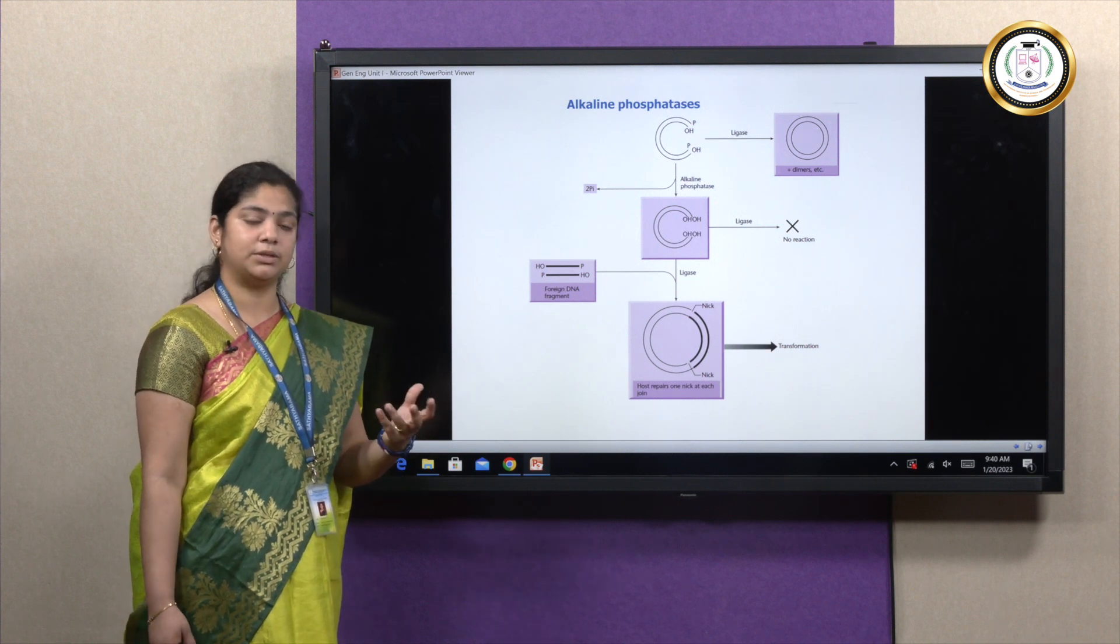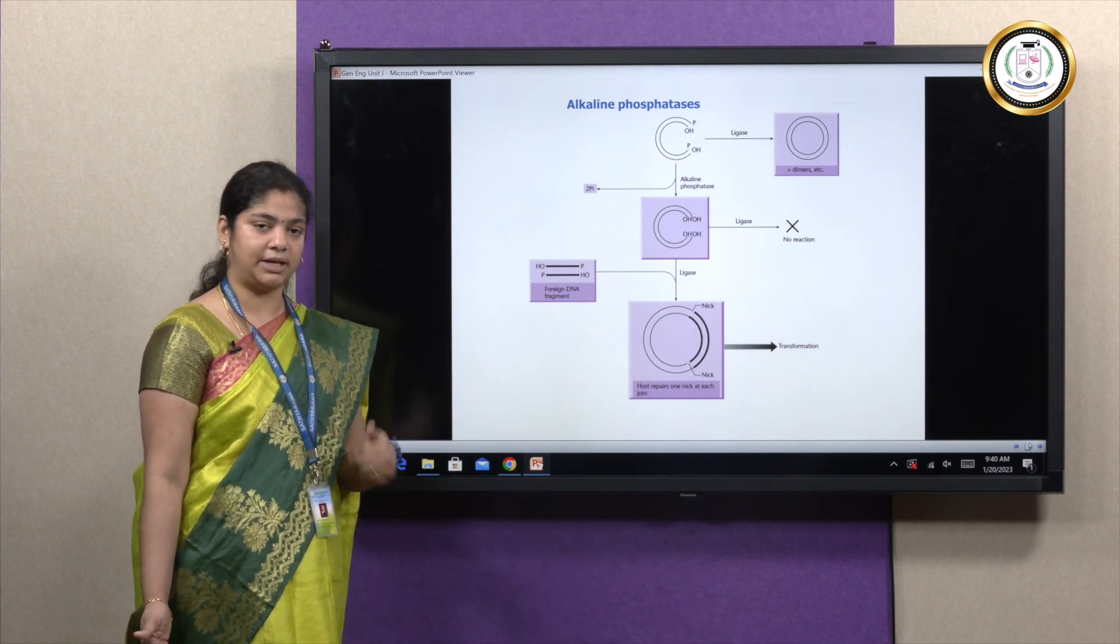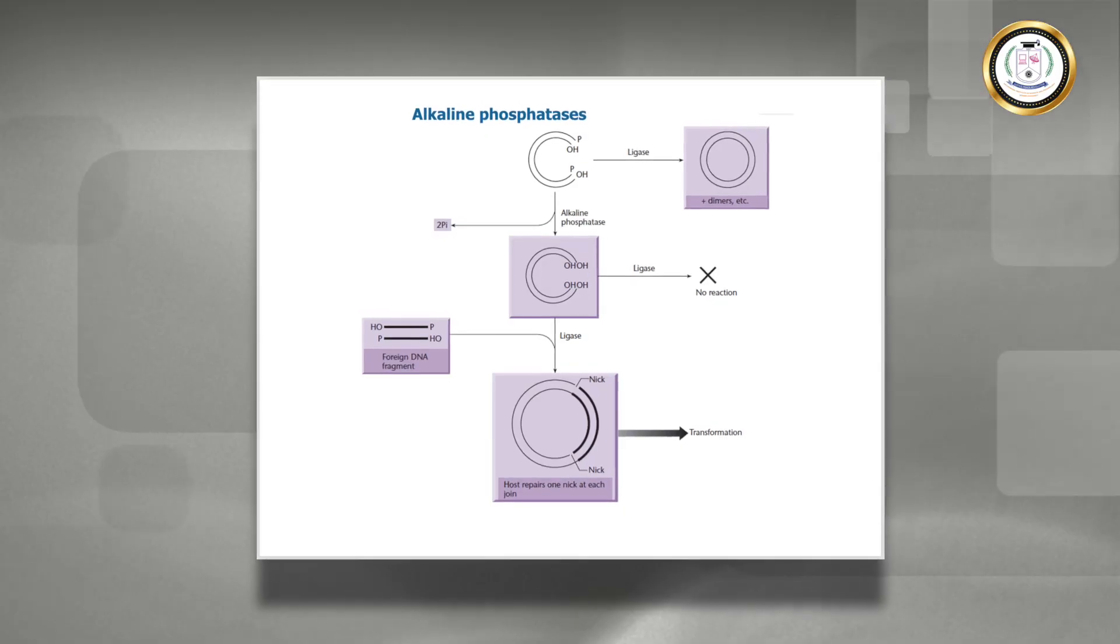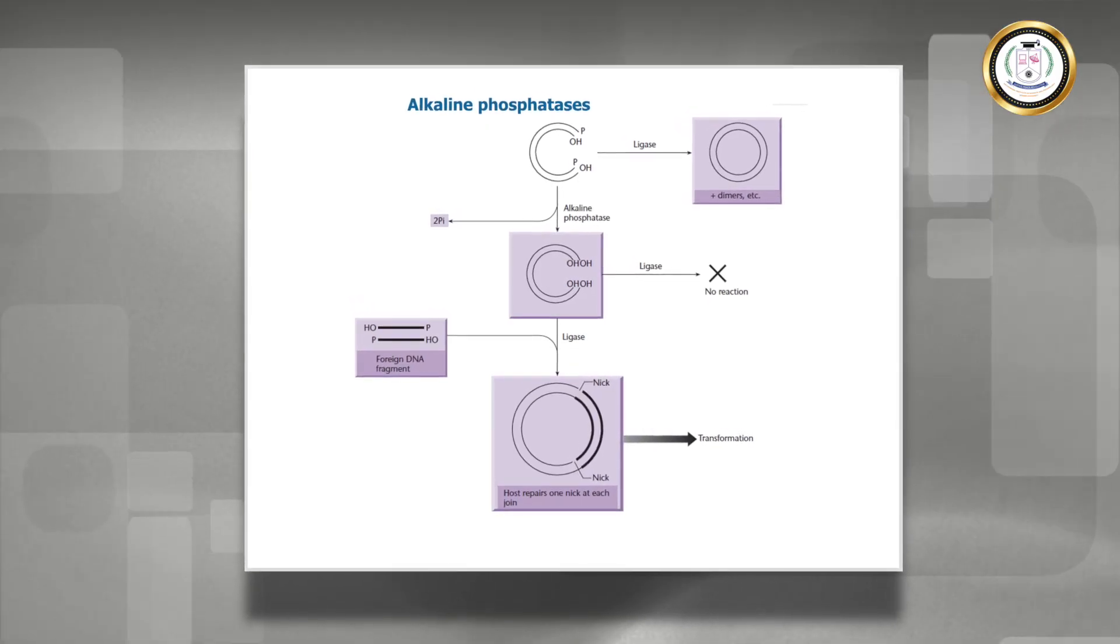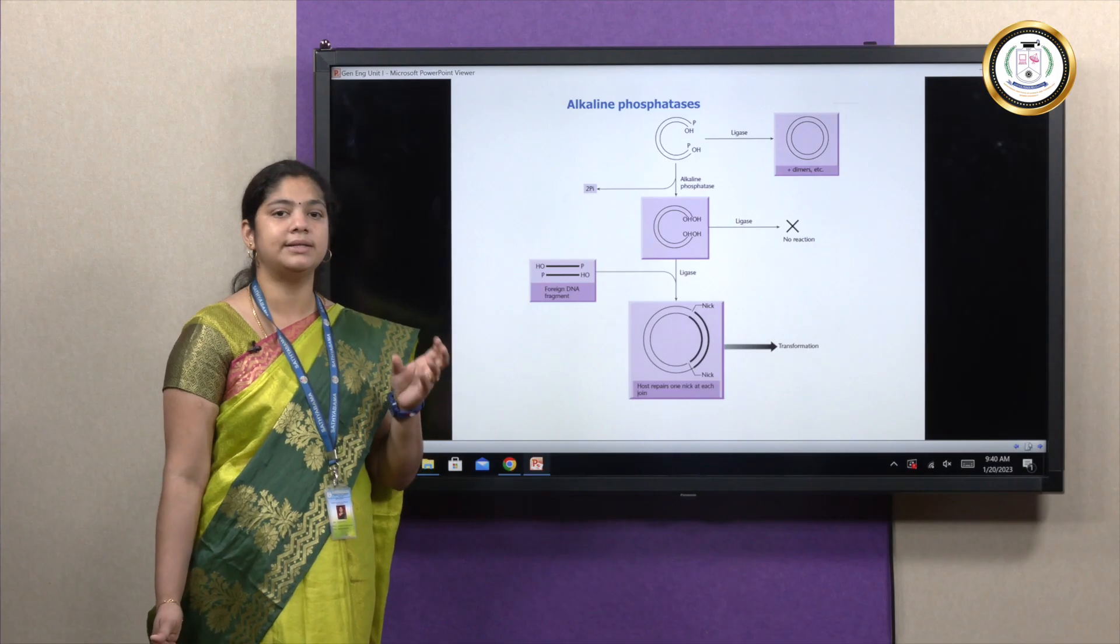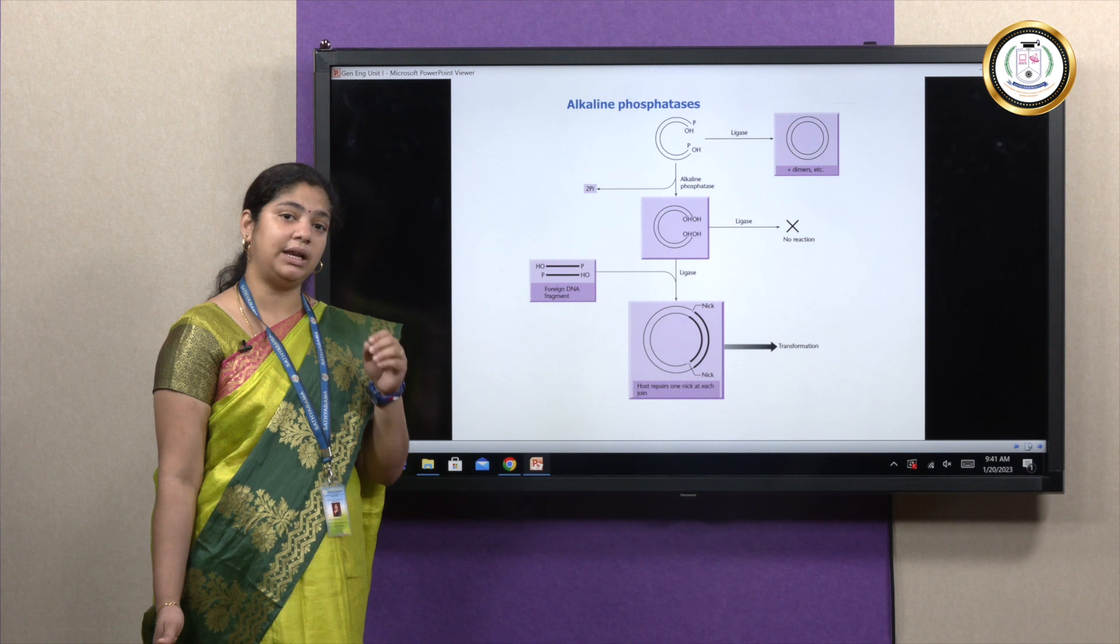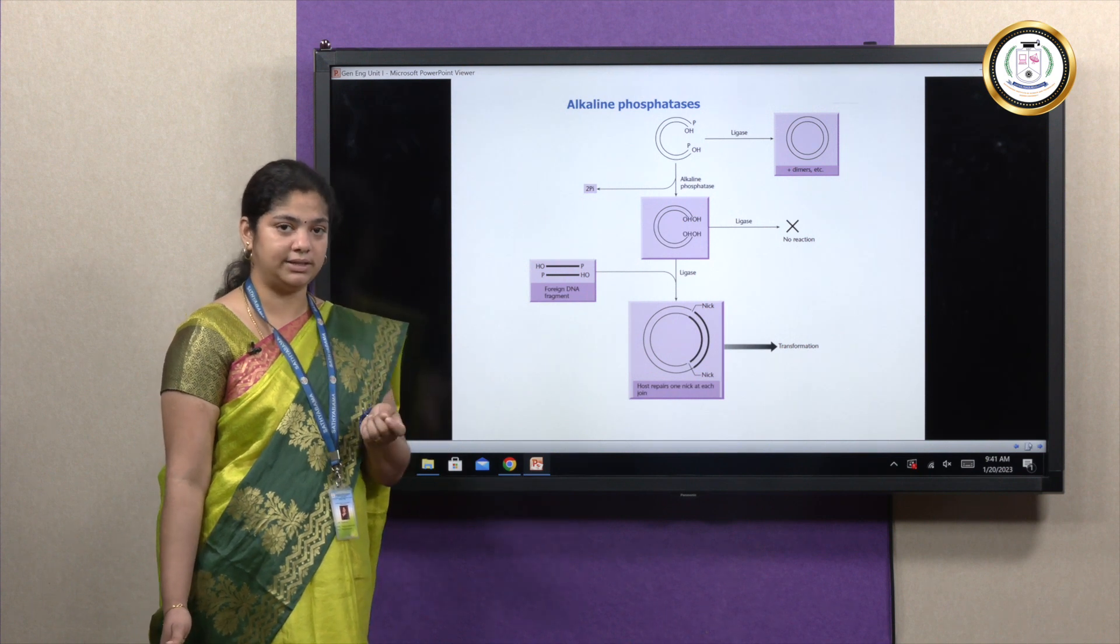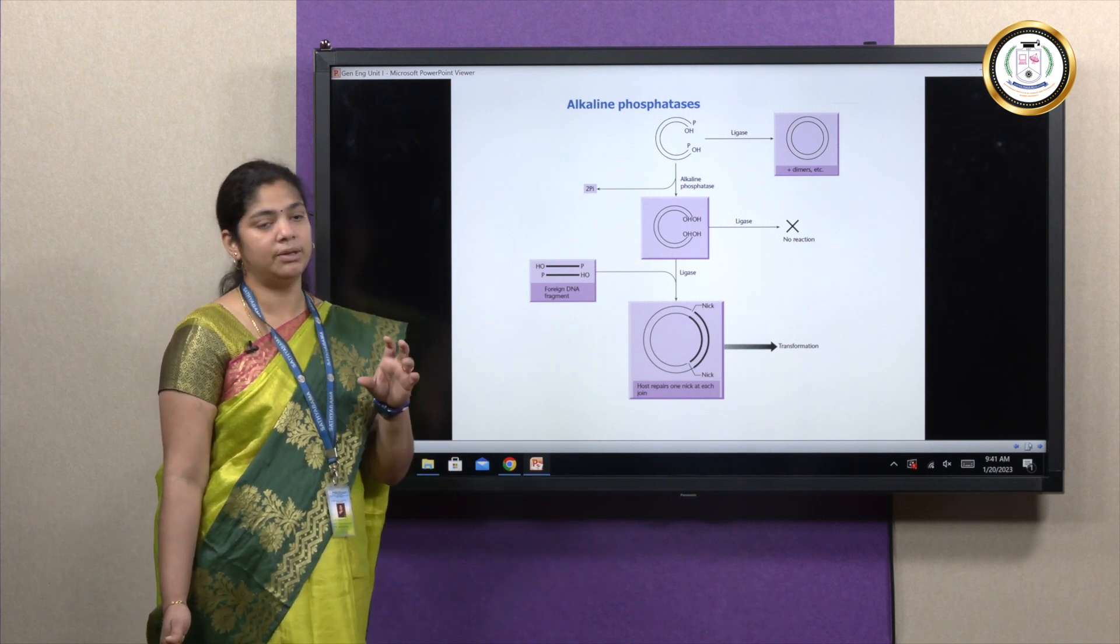In order to prevent the plasmid from getting circularized again, this prevents it from circularization—it keeps adding phosphate groups and hence the vector is kept open and not self-linearized, because we need to add the target sequence insert in the cut region of the plasmid.